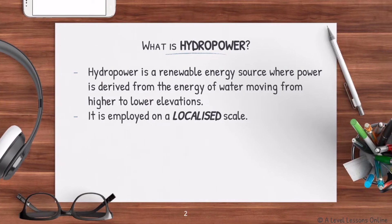So what exactly is hydropower? Hydropower is a renewable energy source whereby power is derived from moving water, flowing from higher to lower elevations. Essentially, it is a renewable energy source derived from moving water.